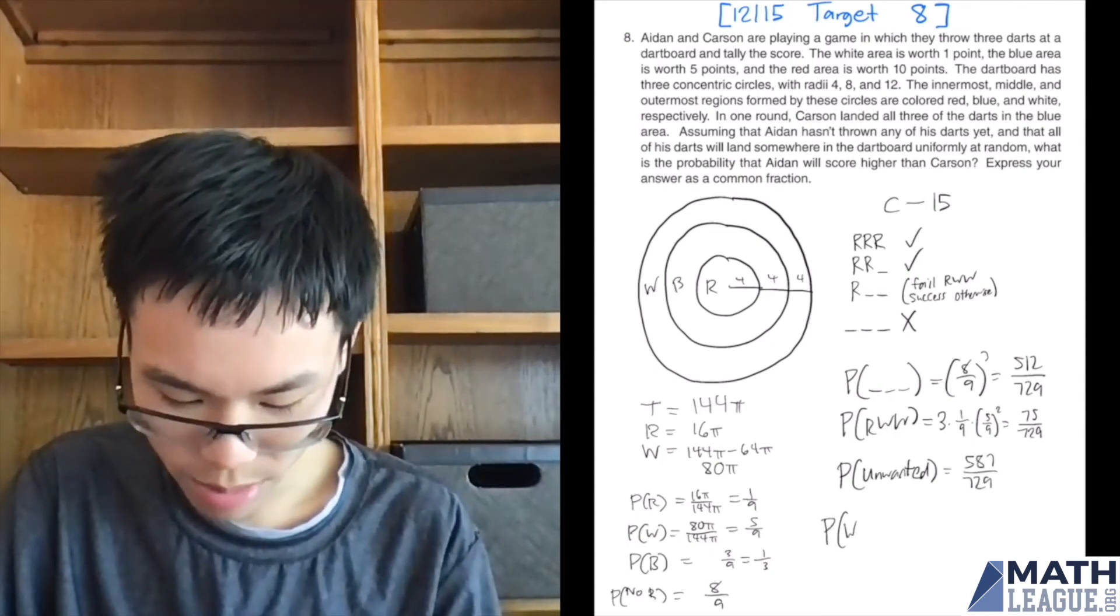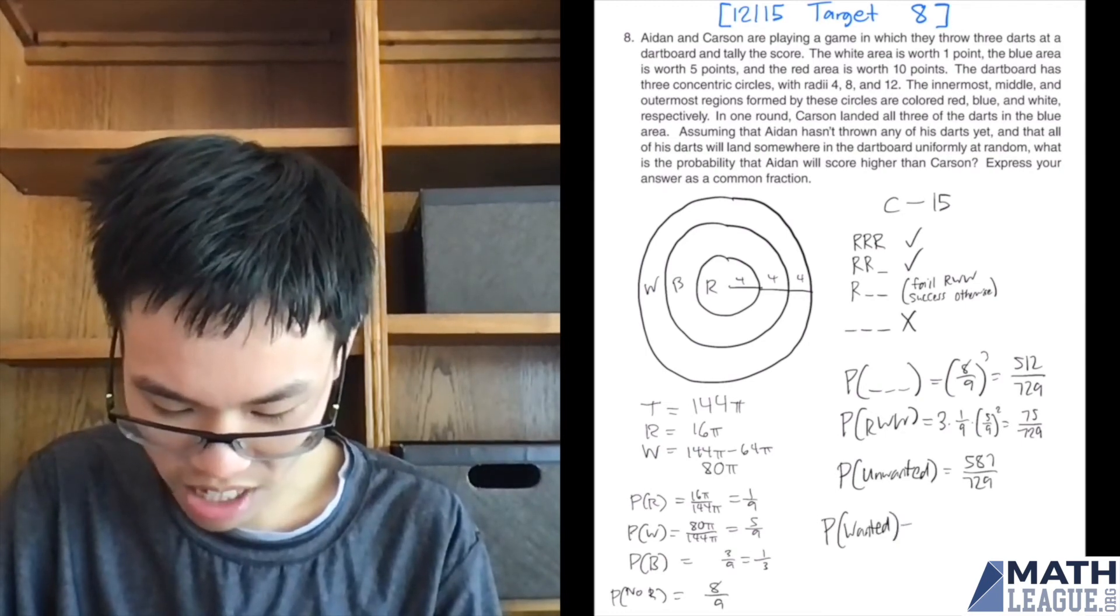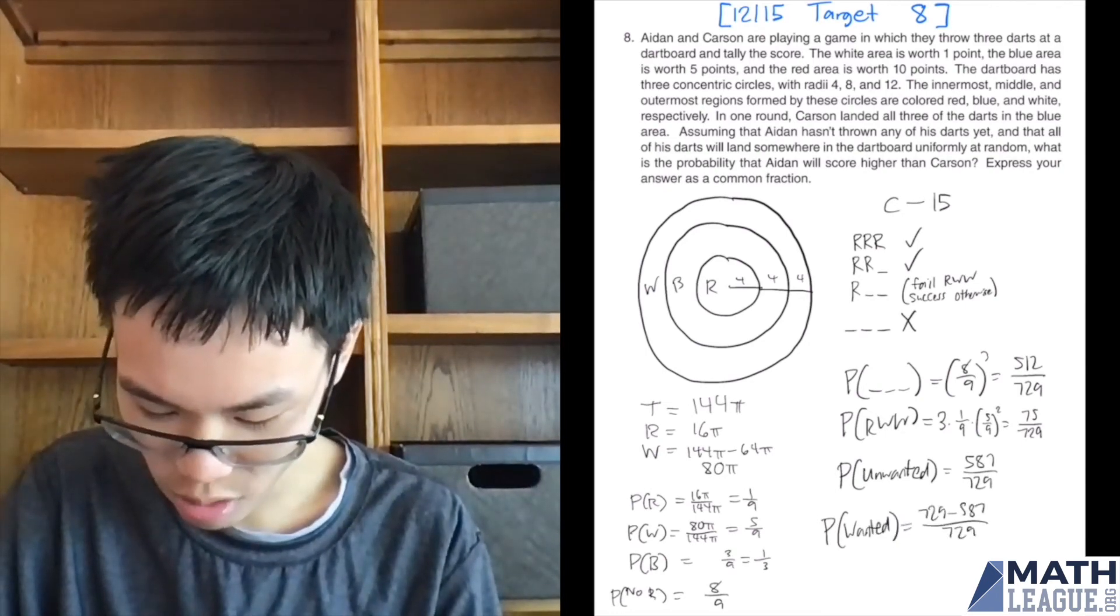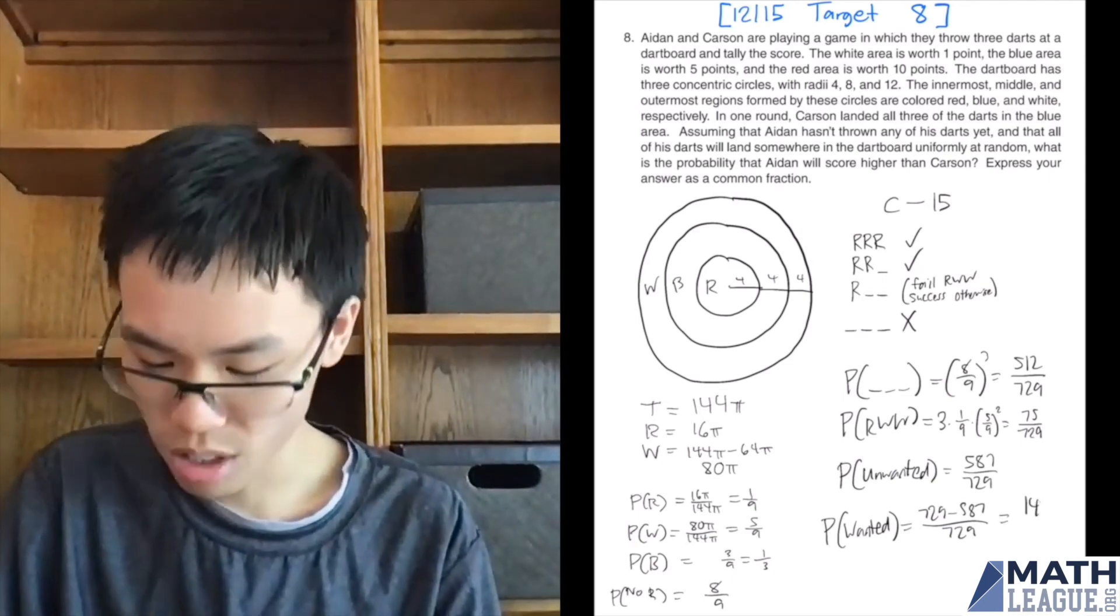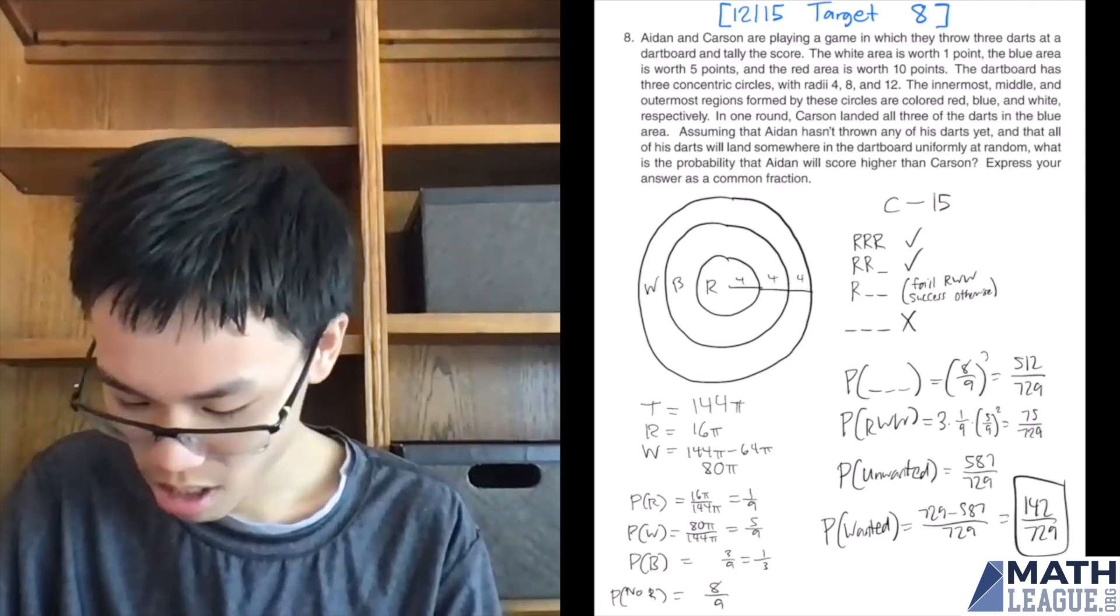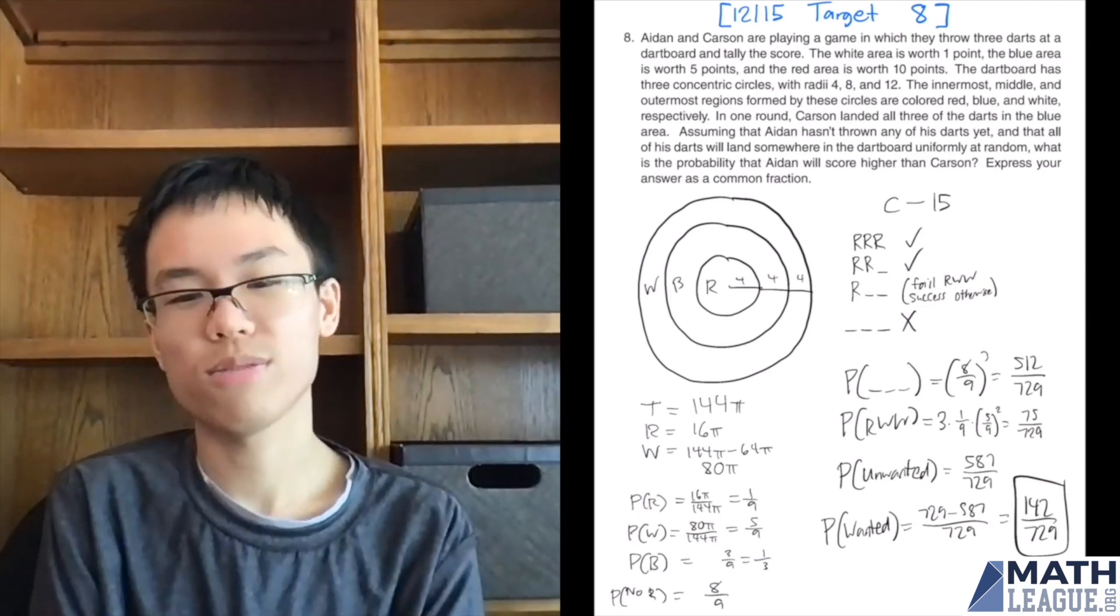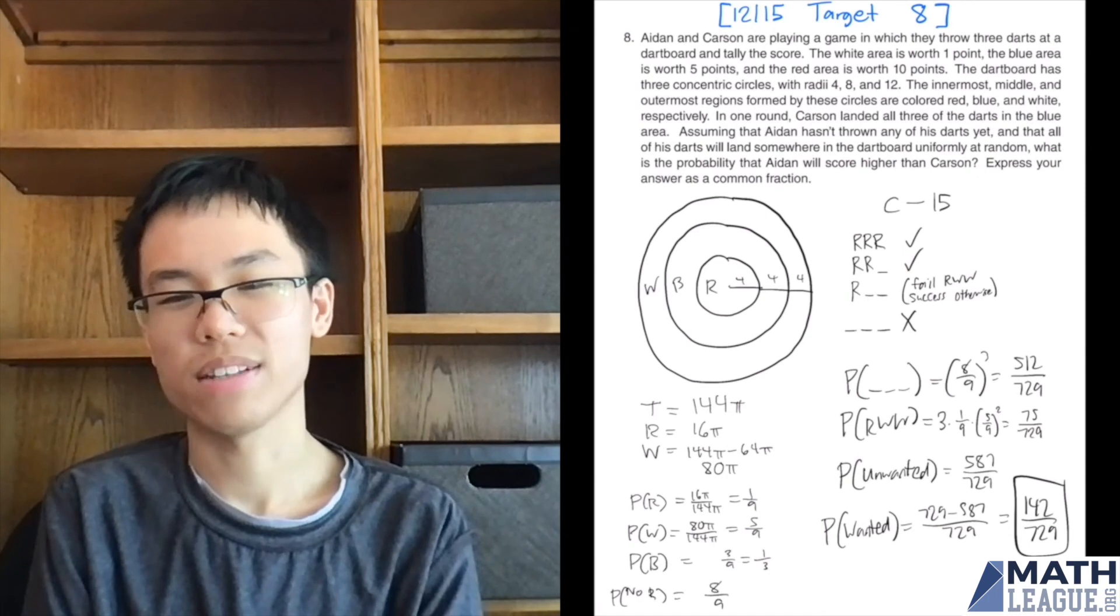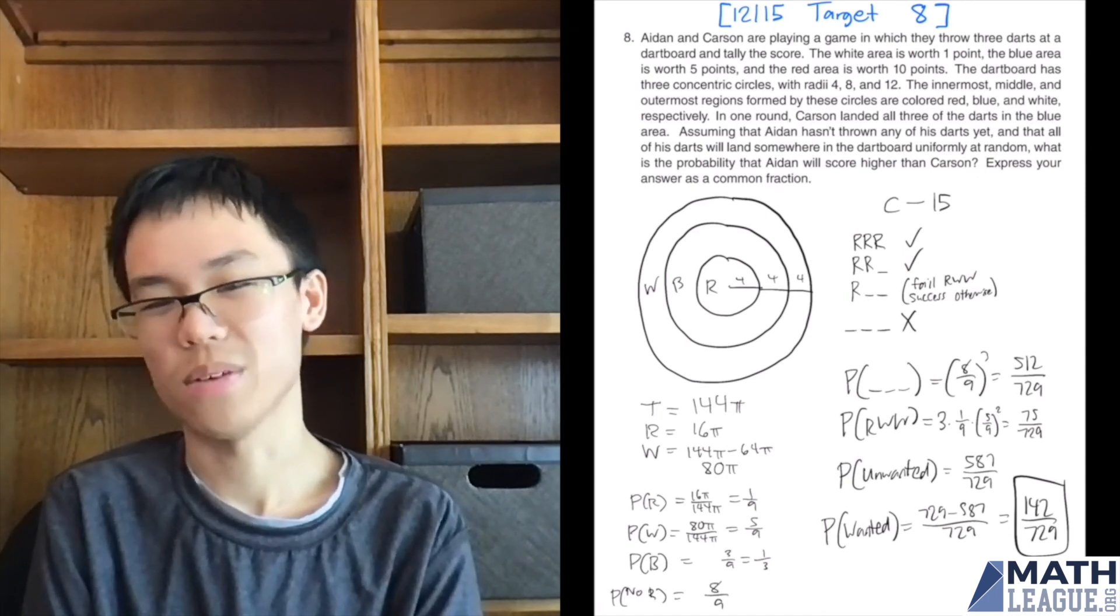So the probability that Aiden scores higher than Carson: 729 minus 587, divide that by 729, and we get a total of 142 over 729. Whew! That was a pretty involved problem. Didn't realize that a dart problem would be pretty long and has so much going on.